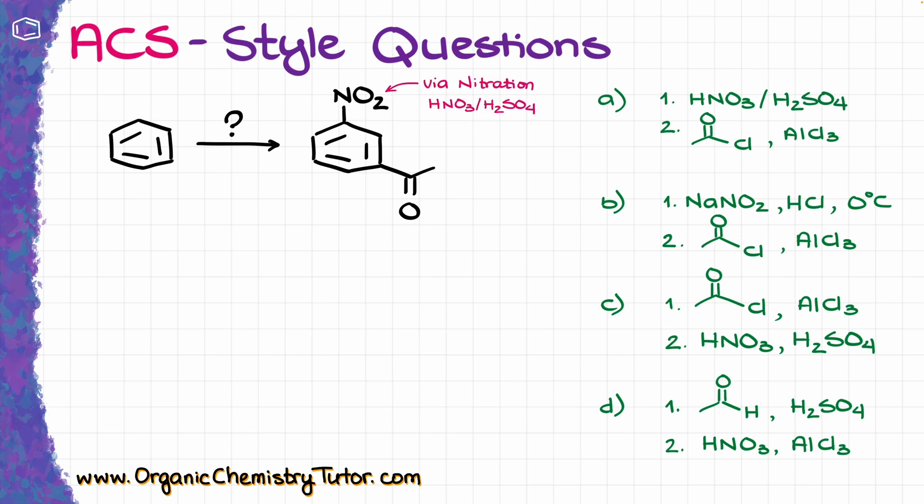We add the nitro group to benzene via the nitration reaction, which uses the concentrated HNO3 nitric acid and sulfuric acid. And the other group is going to be added to our aromatic ring via the Friedel-Crafts acylation reaction, which uses the corresponding acyl chloride and aluminum chloride for the catalysis.